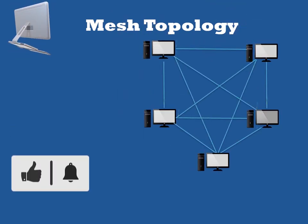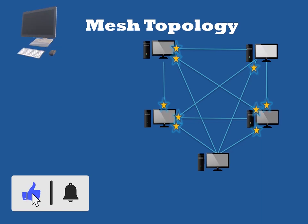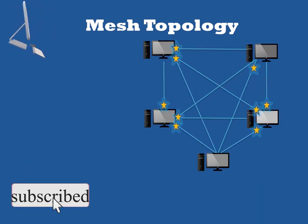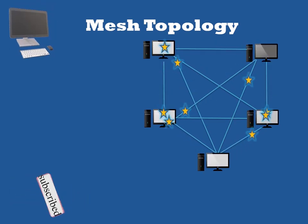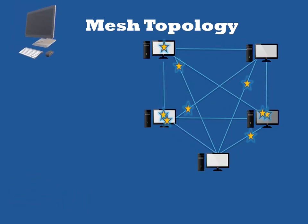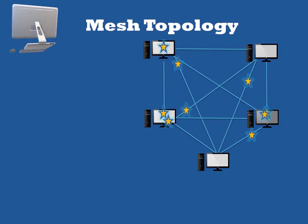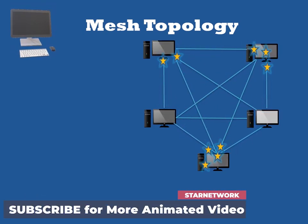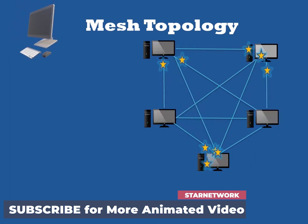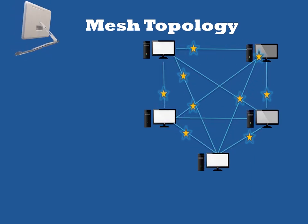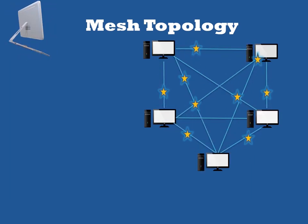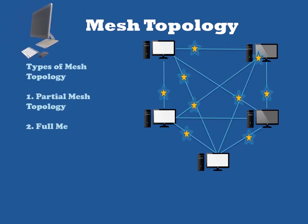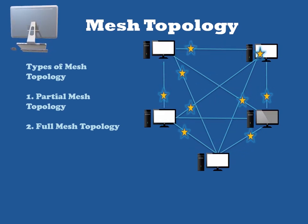A mesh topology is a network setup where each computer and network device is interconnected with one another, allowing most transmissions to be distributed even if one of the connections goes down. It is a topology commonly used for wireless networks. This is a visual example of a simple computer setup on a network with a mesh topology. A mesh topology can be a full mesh topology or a partially connected mesh topology.